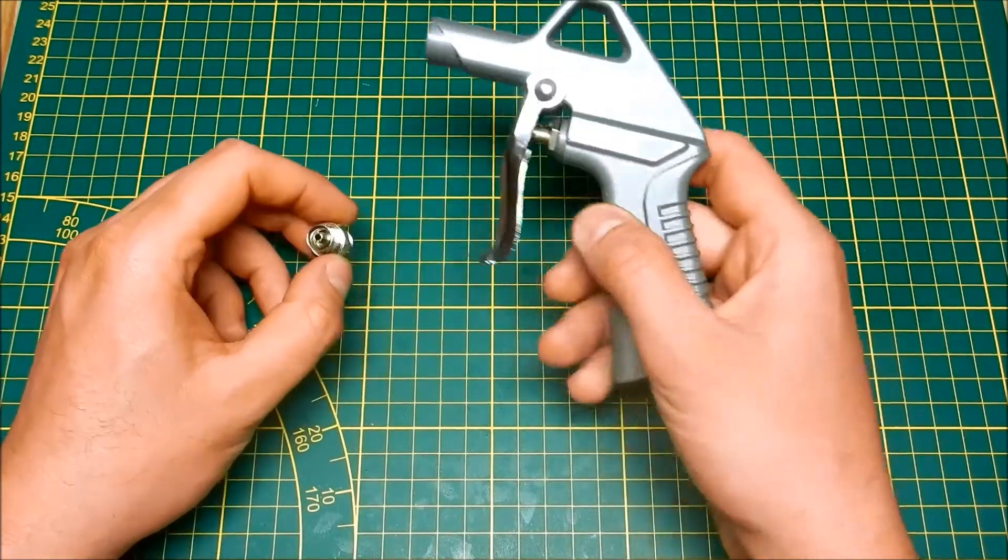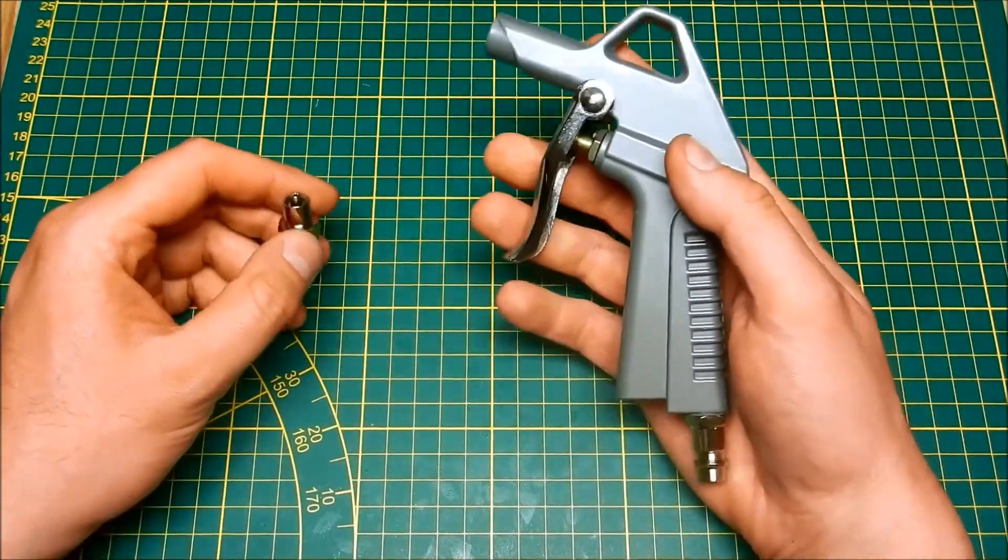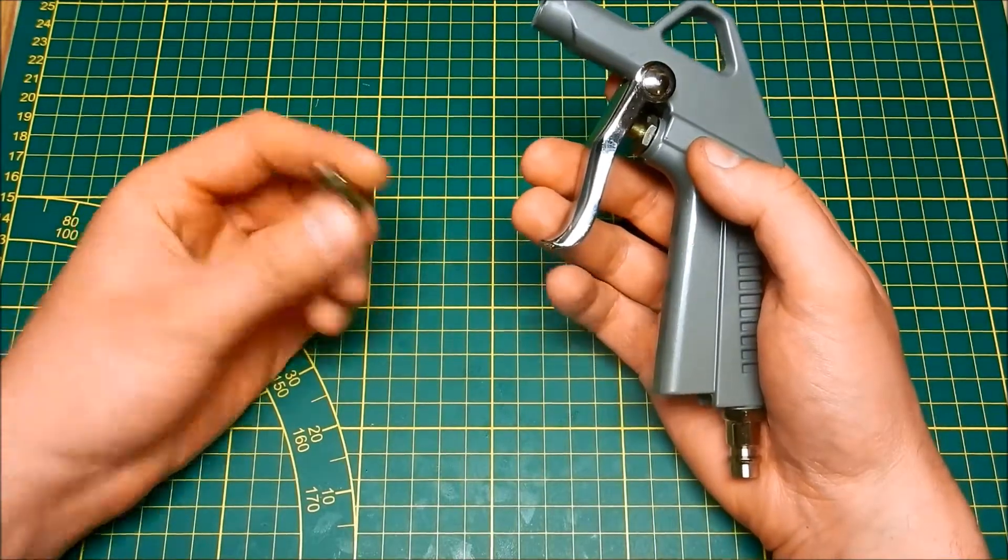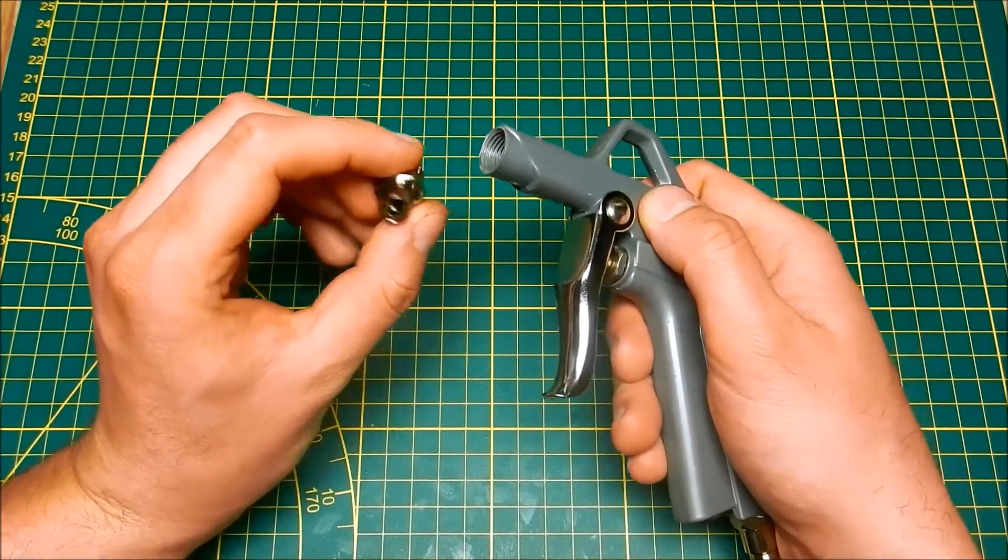Hello there! I want to show you what I think is a quite useful modification for a blowgun. It's this luer lock adapter, which threads into the blowgun.